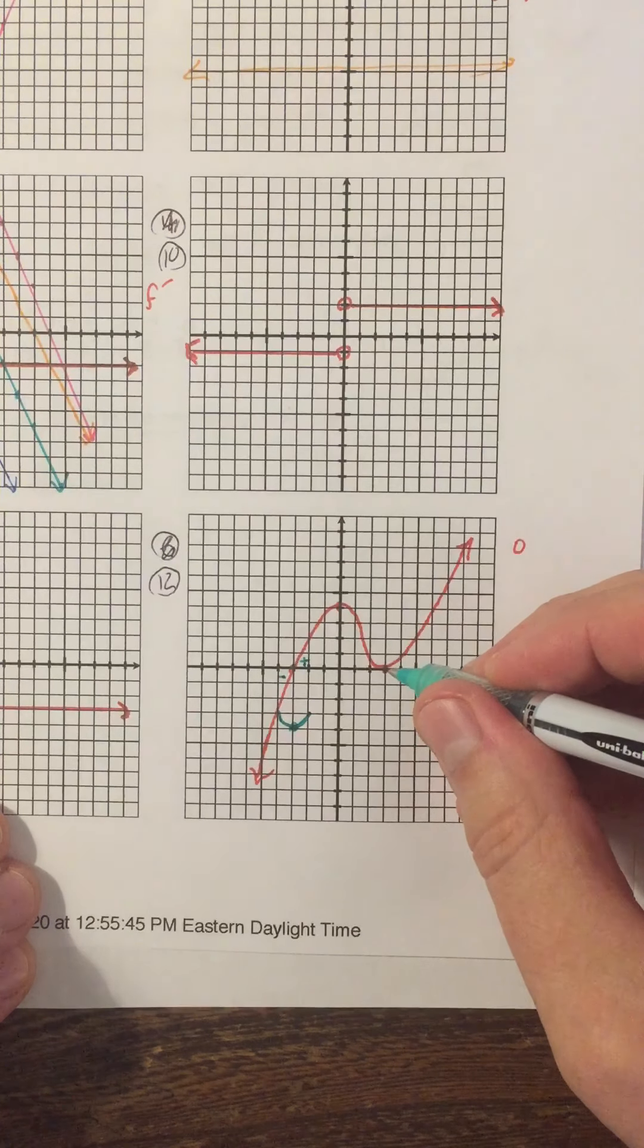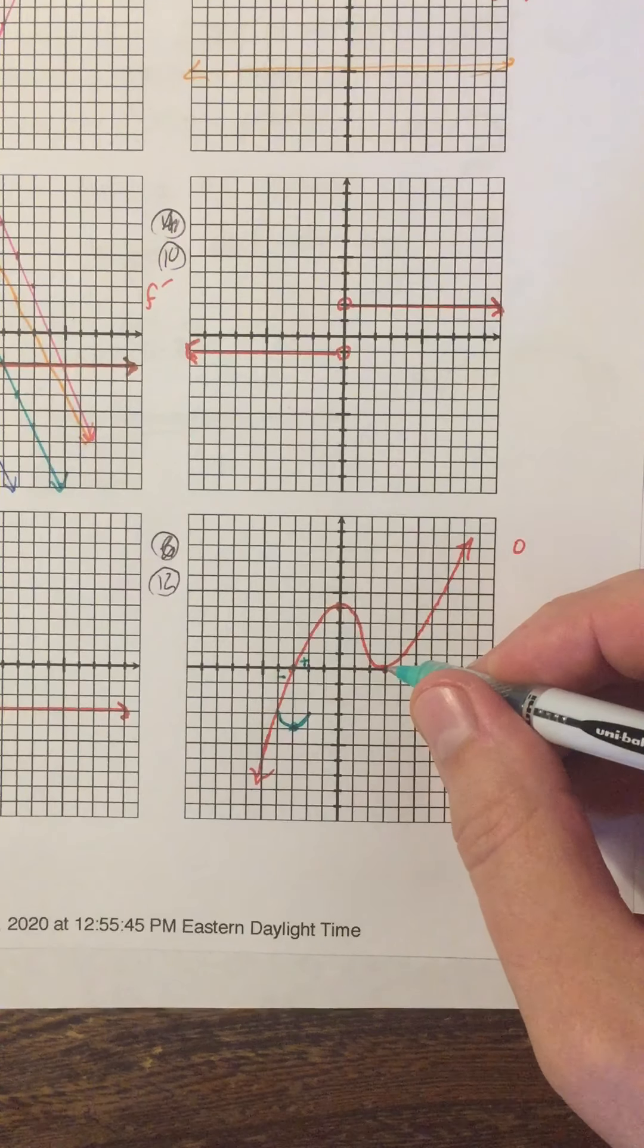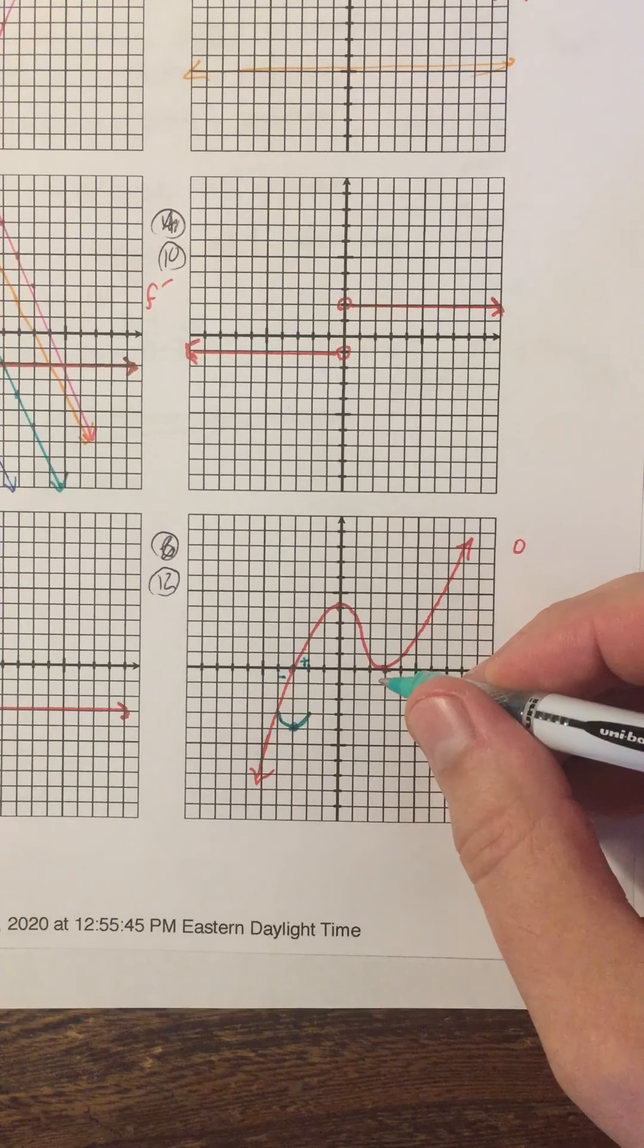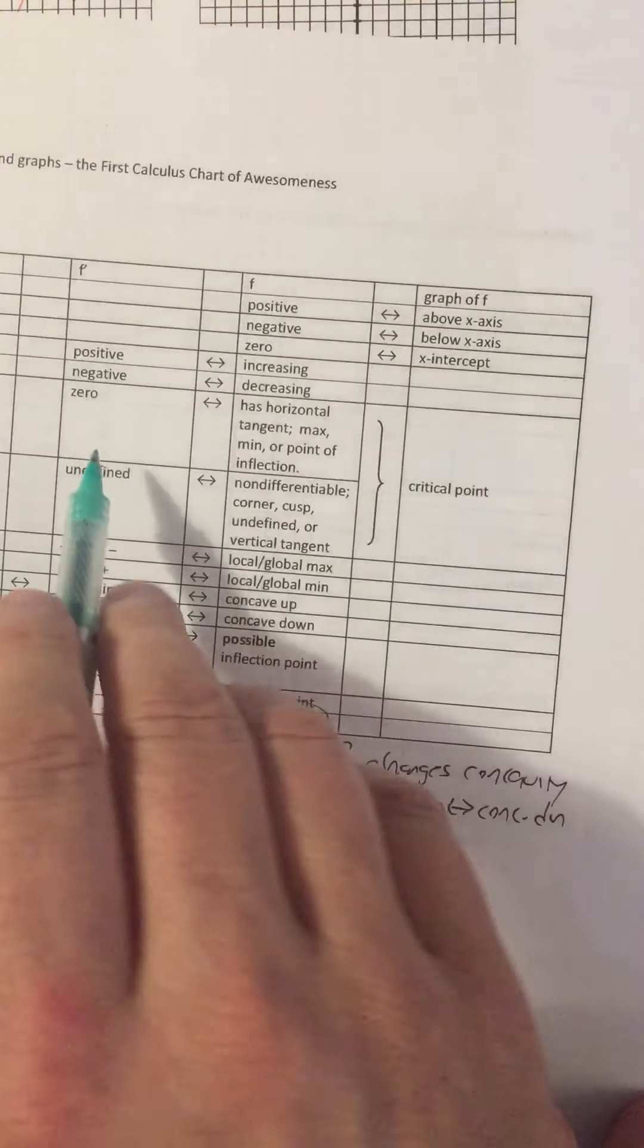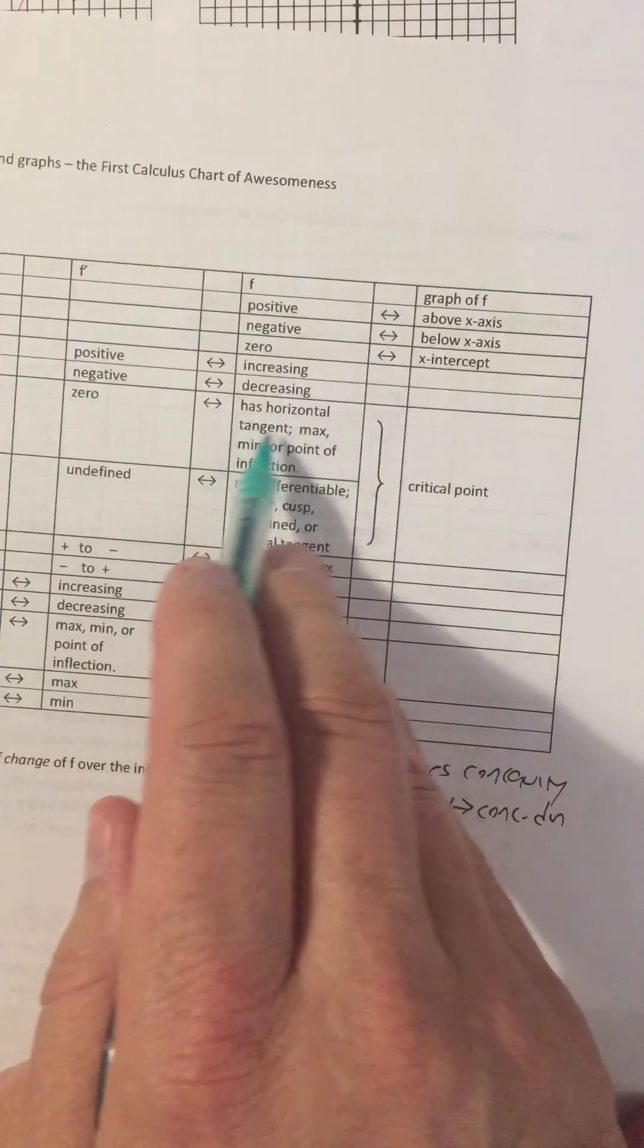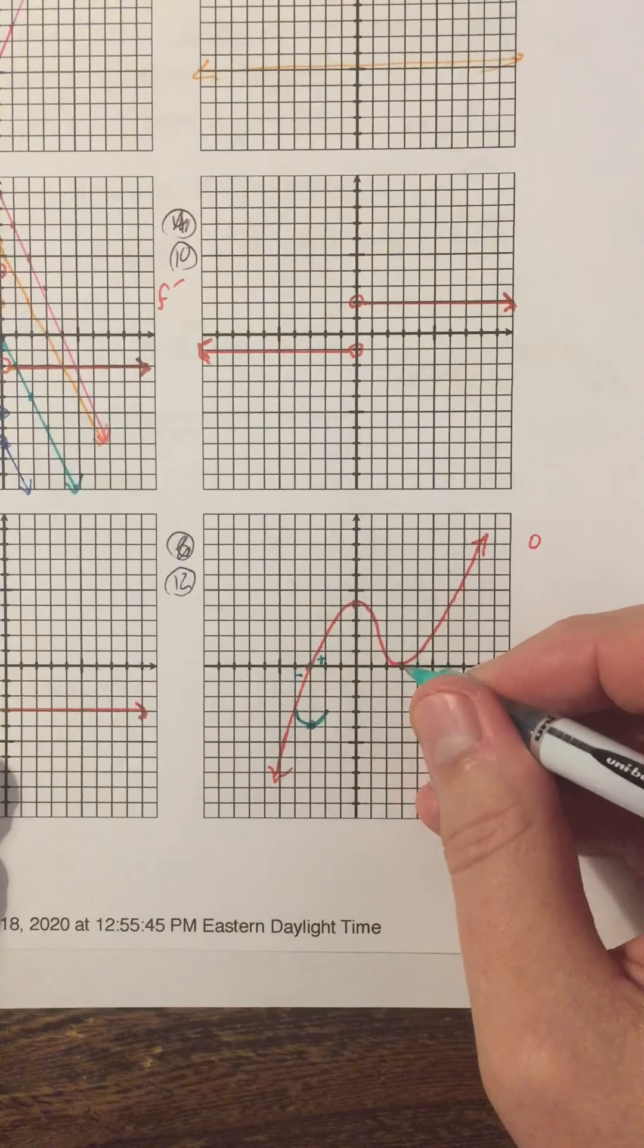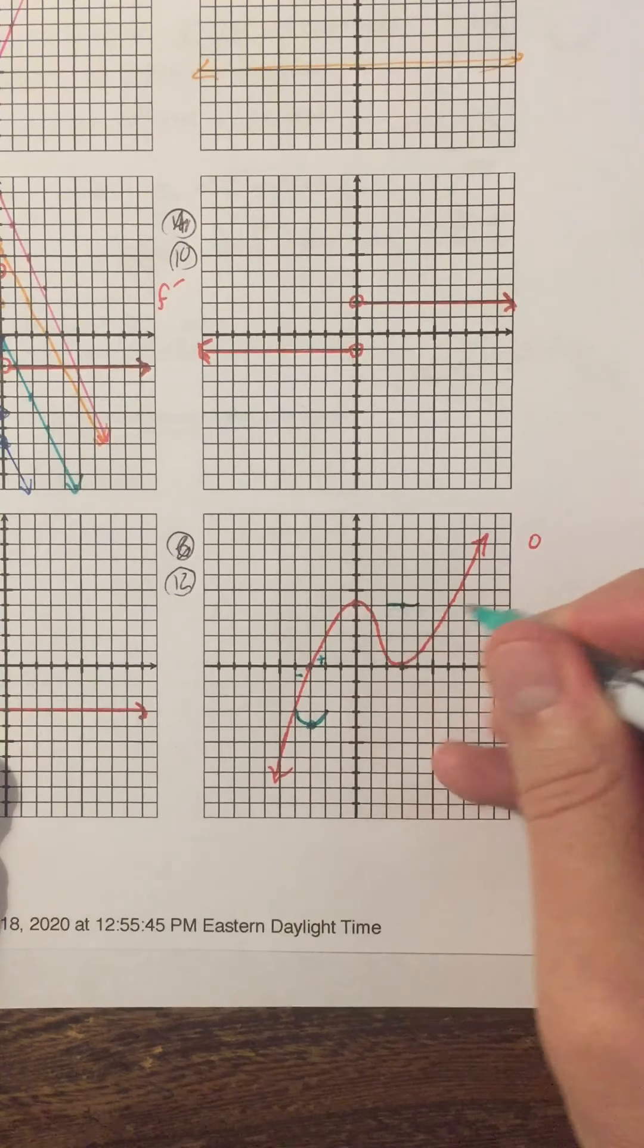What's happening at x equals 3? Because f prime is zero, that means the slope of the tangent is zero, and that means that f has a horizontal tangent, which we actually have here on the calculus chart. If f prime is zero, f has a horizontal tangent. So at x equals 3, we'll just sketch a horizontal tangent.